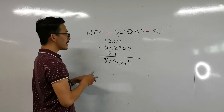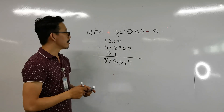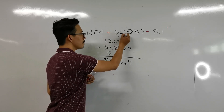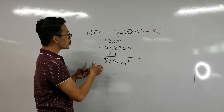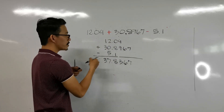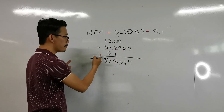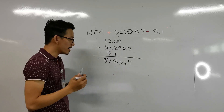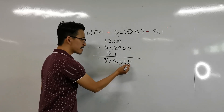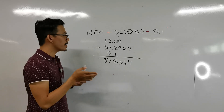How are we going to determine which is the least precise measurement? We just take note of the given values. If we align these numbers — 12.04 plus 30.8967 minus 5.1 — our calculator will give us 37.8367. That is the calculator answer.